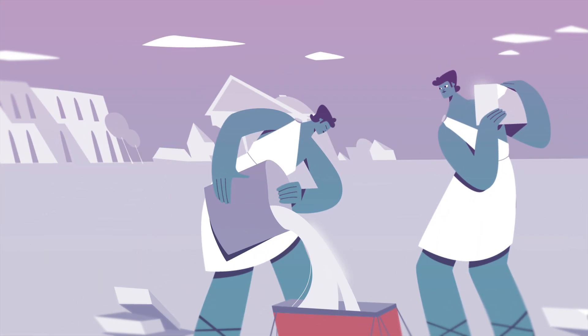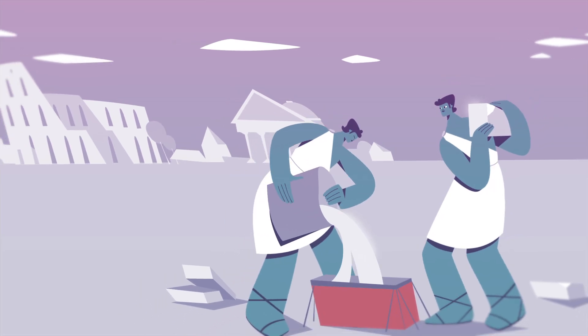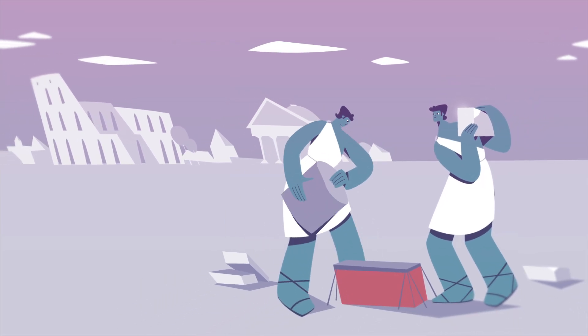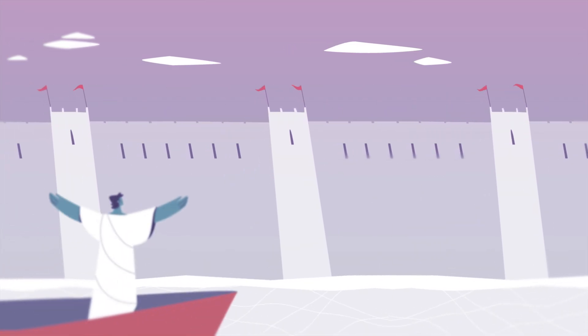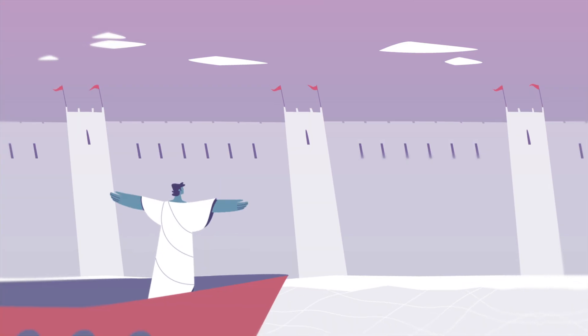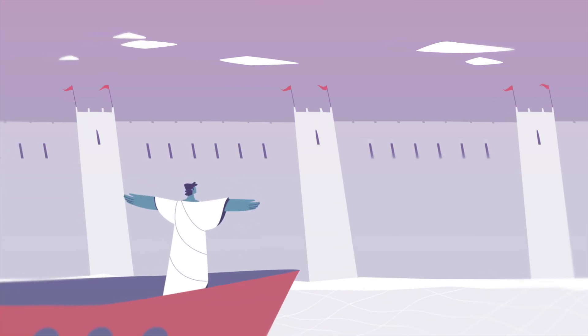Thousands of years ago, the Romans invented a material that allowed them to build much of their sprawling civilization. Pliny the Elder praised an imposing seawall made from the stuff as impregnable to the waves and every day stronger.